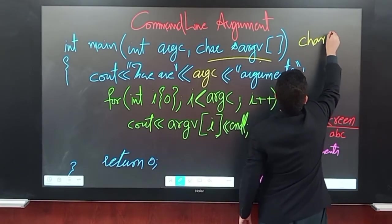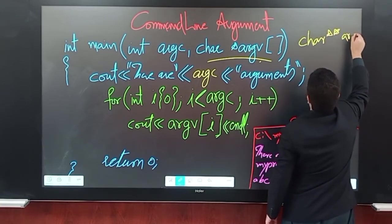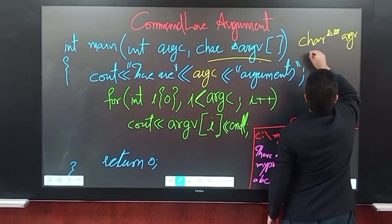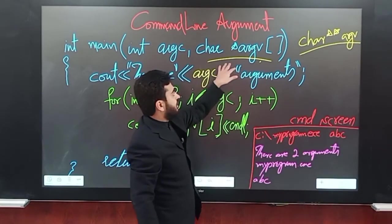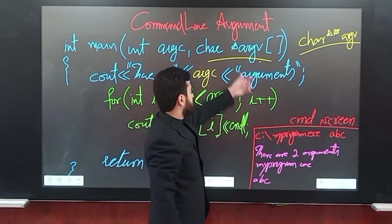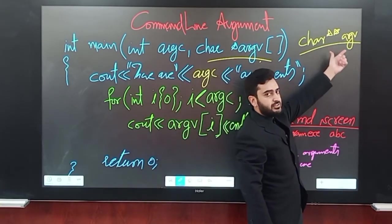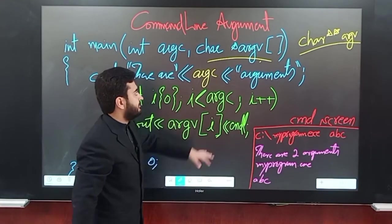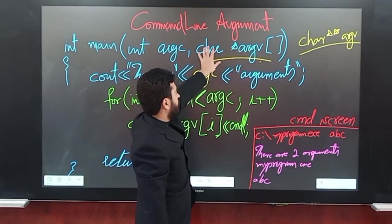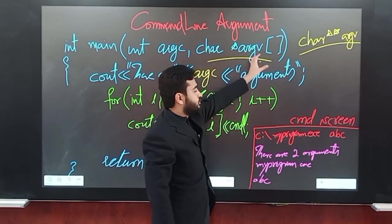You can also write argv as a double pointer. Both forms are identical and you can use either one. It is easy to understand that there is a pointer to an array in both cases.